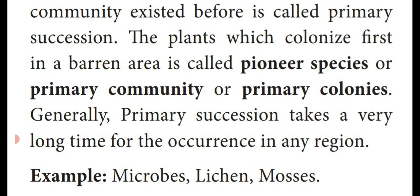Generally, primary succession takes place over a very long time for its occurrence in any region. The empty area is gradually developed by the plant community. It will take a long time for the occurrence of a species. Examples include microorganisms, lichen (which is an association between algae and a fungal partner), and mosses, which are bryophytic plants.